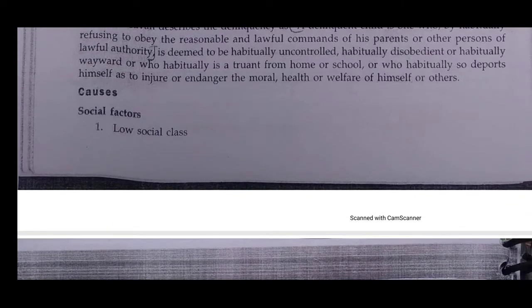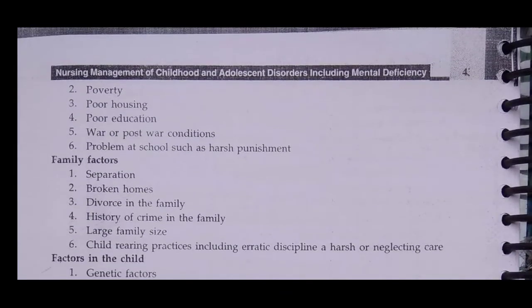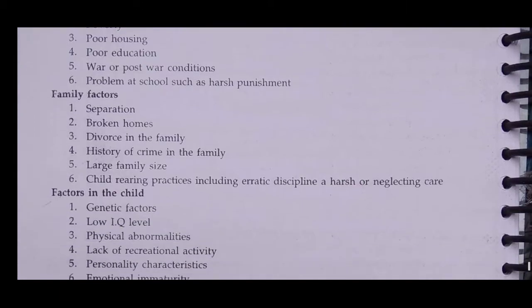Next we will talk about the causes of juvenile delinquency. The first is social factors, which means low social class. The next cause is poverty. As mentioned, low socioeconomic conditions mean the child's needs cannot be fulfilled. Poor housing and poor education are also contributing factors.